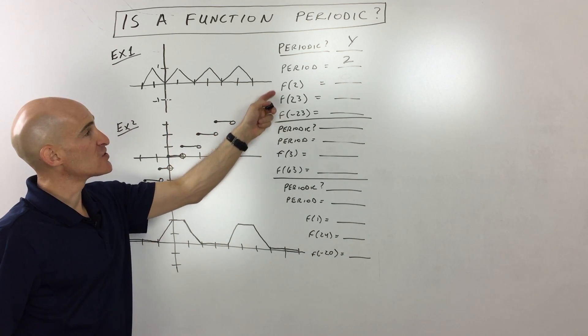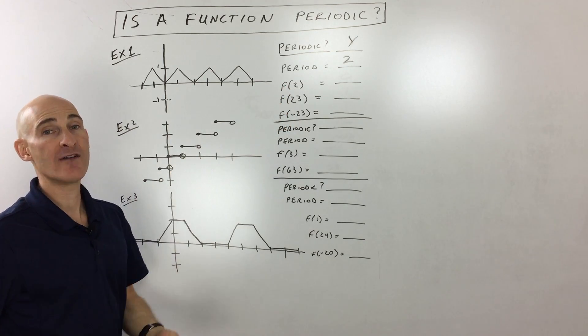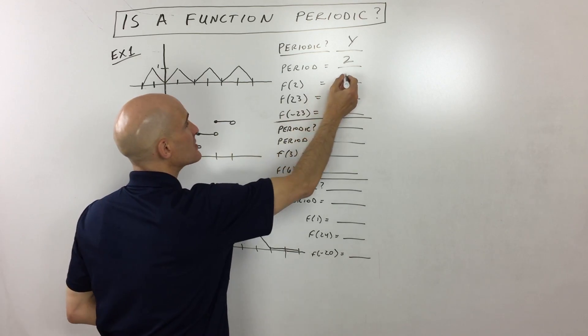Now, the next few questions relate to the output for a given input. So when x is two, what's the y value? What's the output? Well, you can see when x is two, the y value is zero.